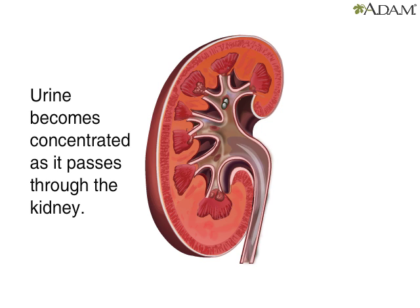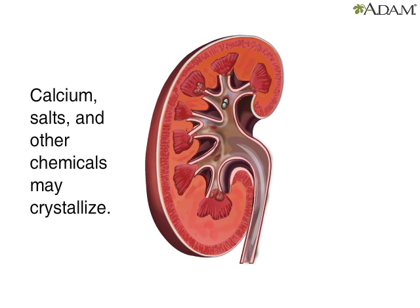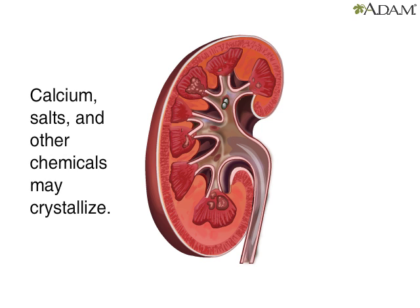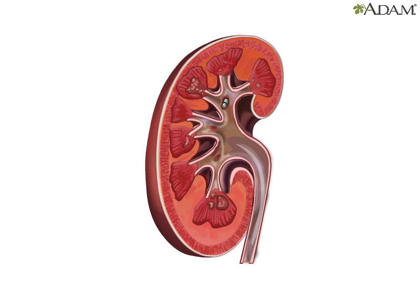As urine passes through the kidneys, it can become very concentrated. When the urine becomes too concentrated, calcium, uric acid salts, and other chemicals dissolved in the urine can crystallize, forming a kidney stone or renal calculus.